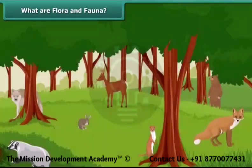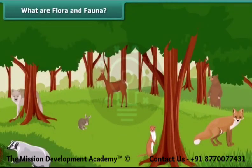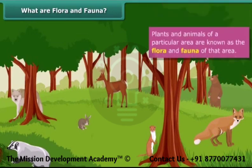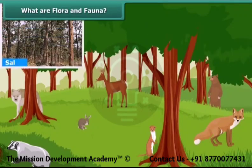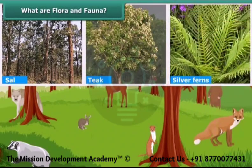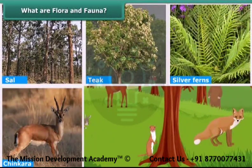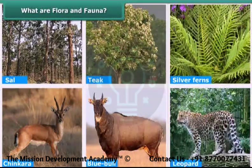You must have observed that some animals and plants typically belong to a particular area. Plants and animals of a particular area are known as the flora and fauna of that area. For example, sal, tea, silver ferns, etc. are the flora, and chinkara, blue bull, leopard, etc. are the fauna of the Panchmari biosphere reserve.